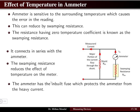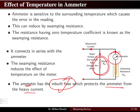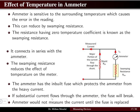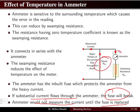Ammeters always have an inbuilt fuse which protects them from heavy current. Apart from the shunt resistance, the ammeter has an internal fuse. If current exceeding the ammeter's rating flows through it, the fuse will blow, and the ammeter will not work until the fuse is repaired or replaced. This inbuilt fuse further protects the internal circuit of the ammeter in addition to the shunt resistance.